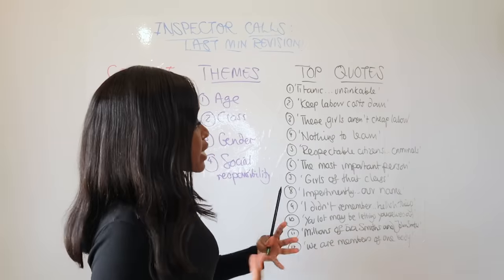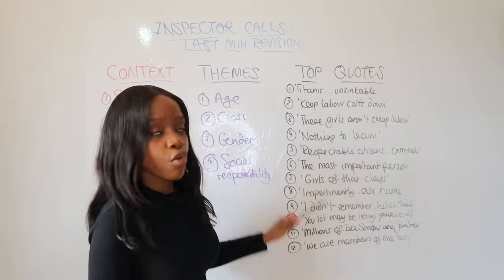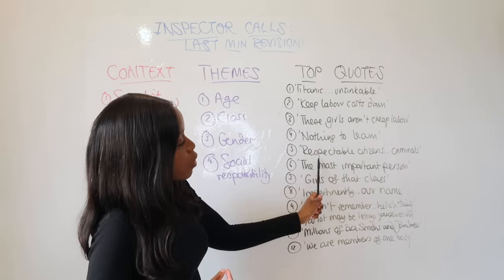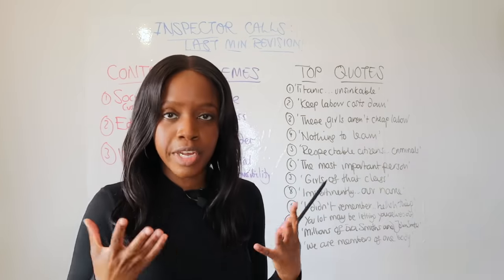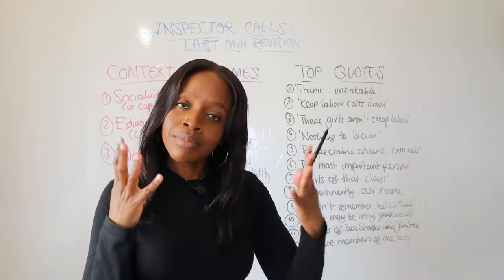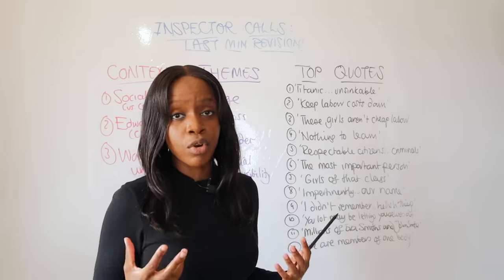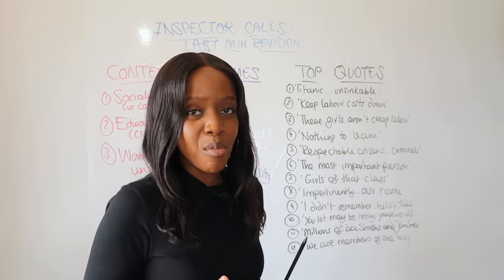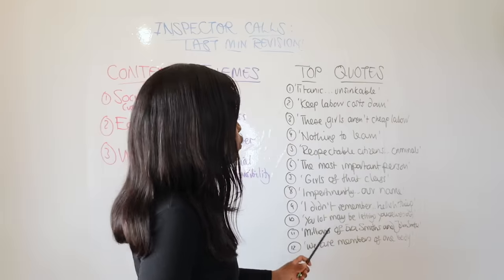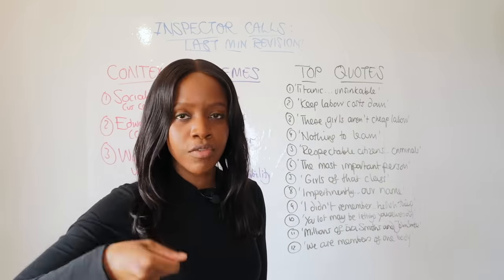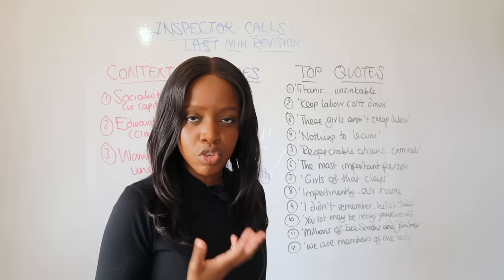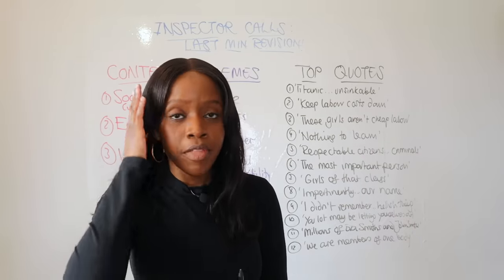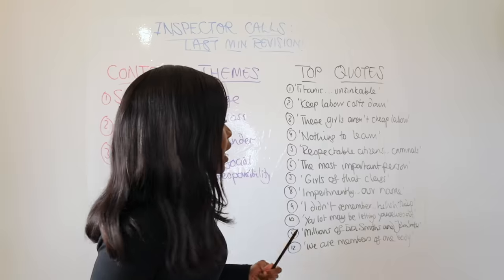The next quotations relate to Gerald Croft. The first is deeply ironic — when the Inspector arrives, Gerald says, 'We're respectable citizens, not criminals.' This is ironic because Gerald thinks he's above the law and has a very high opinion of himself, but he is actually very immoral. The second quotation reveals that he took advantage of Daisy Renton, keeping her as his mistress because he loved having power over her — he was the most important person in her life.